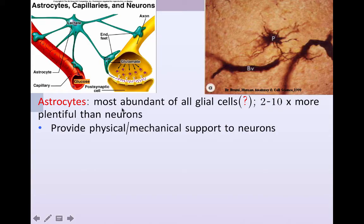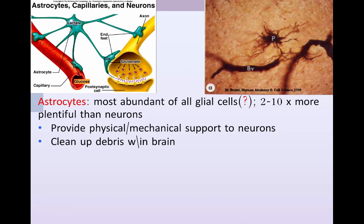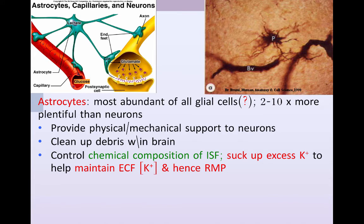Another type of glial cell found in the central nervous system is astrocytes. Some data suggests astrocytes are the most abundant of all glial cells — there may be anywhere from two to ten times more astrocytes than neurons, varying from region to region of the brain. They provide some physical and mechanical support to neurons, help to clean up debris within the brain, and help to control the chemical composition of the interstitial fluid. Importantly, they suck up excess potassium, which helps maintain the extracellular fluid potassium concentration and the resting membrane potential.